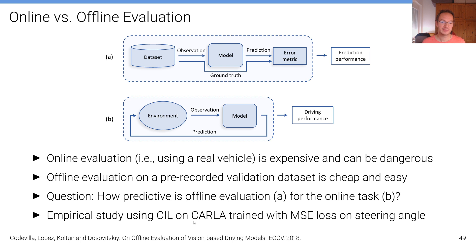And so this paper provides an empirical study using conditional imitation learning agents on CARLA trained with an MSE loss on the steering angle. So it's a standard conditional imitation learning setup but that doesn't matter, it's just any agent that is now evaluated in both online and offline scenarios in order to measure correlations.